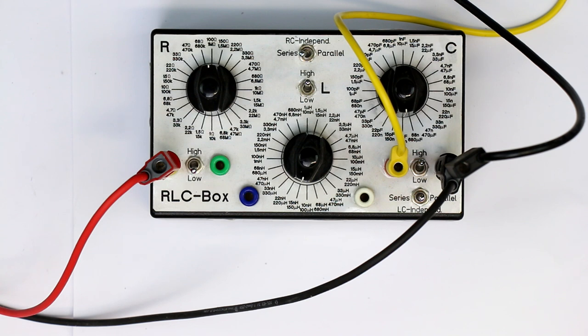Let's demonstrate the different filter types that you can easily realize with the RLC box, and let's start with a classical RC low-pass filter.